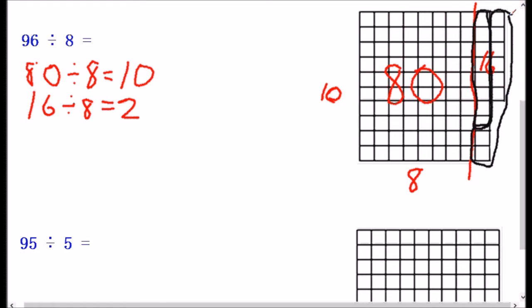So 80 divided by 8 is 10. 16 divided by 8 is 2. Well, how does that help us figure out what 96 divided by 8 would be? Well, 96 is just this whole thing, and that is the 80 plus the 16 is 96. And so if we took this whole thing and divided it by 8, that would give us a total of 12.